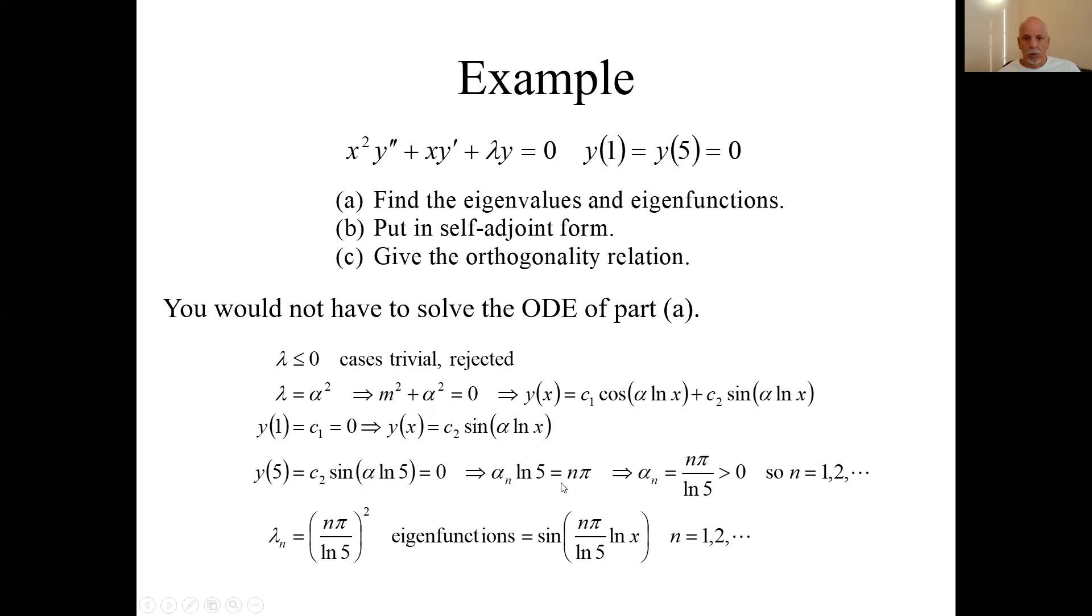α sub n equals nπ over log 5, where n are all these positive integers, so we found the eigenvalues and the eigenfunctions. Once you get this general solution, you should have been able to do that.